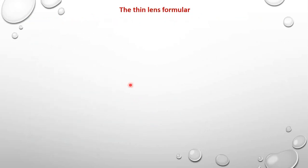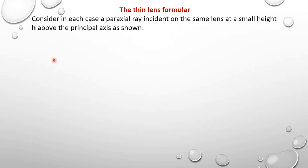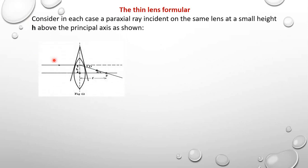Let's look at the thin lens formula. We are going to consider two diagrams. From figure one, a ray parallel to the principal axis is refracted through the principal focus and undergoes a small deviation D. We assume the distance H is small, so the deviation is a small angle — because we are treating this as a prism where the deviation D applies to a small angle prism.